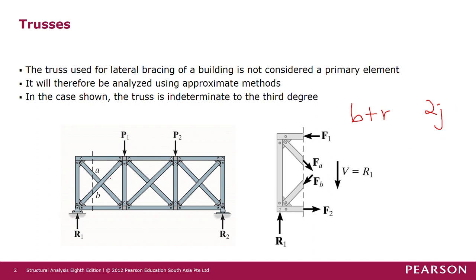In this particular example, we have 16 truss members. Since this is a pin support, we have a horizontal reaction H, so the total number of reactions is 3. There are 8 joints. B plus R gives us the number of unknowns in the structural system, and 2J gives the total equilibrium equations, since one joint gives us 2 equilibrium equations, meaning the number of joints multiplied by 2 gives the total equations we have to solve for the unknowns.